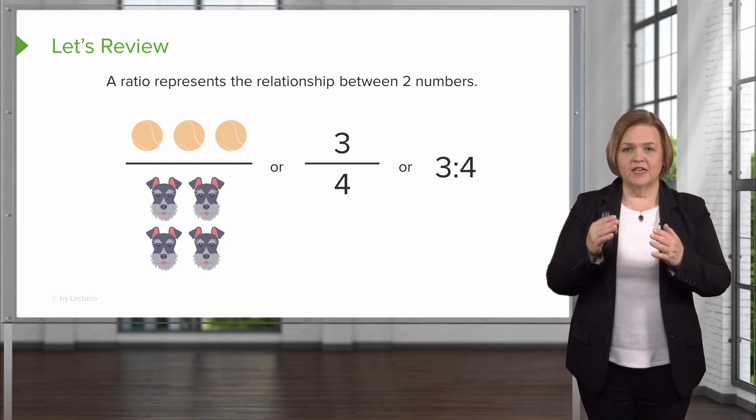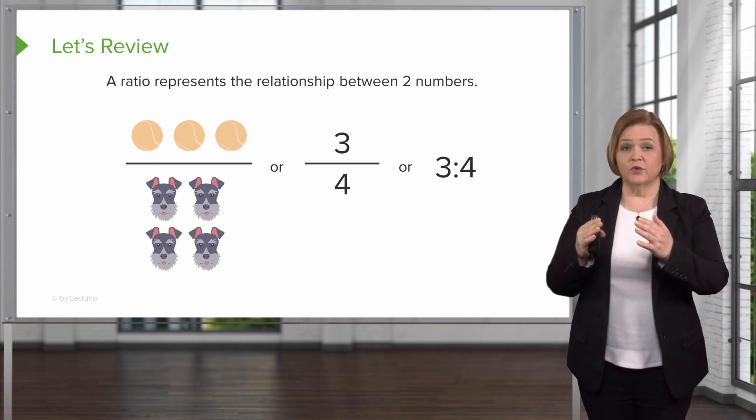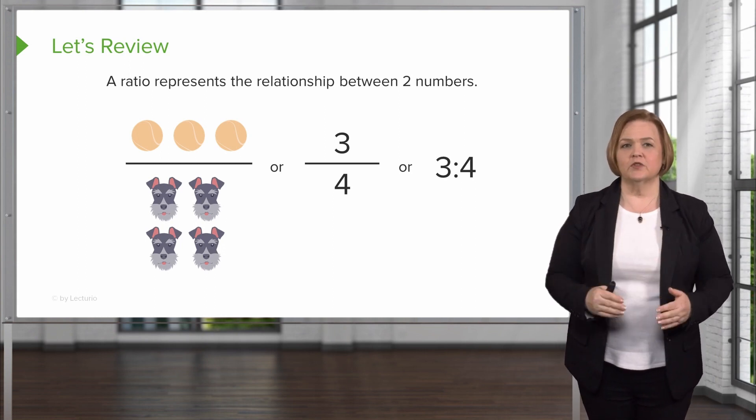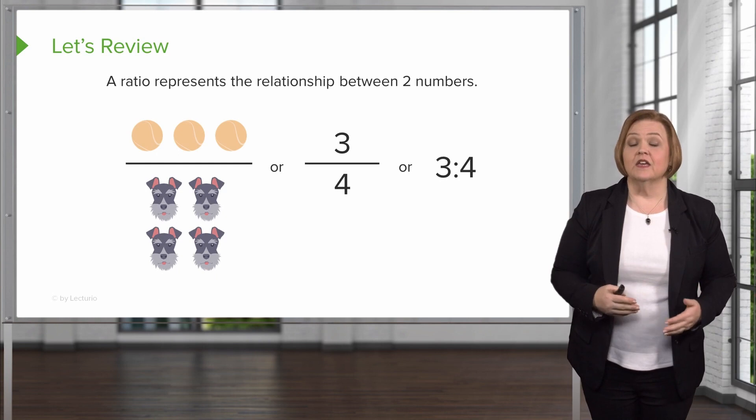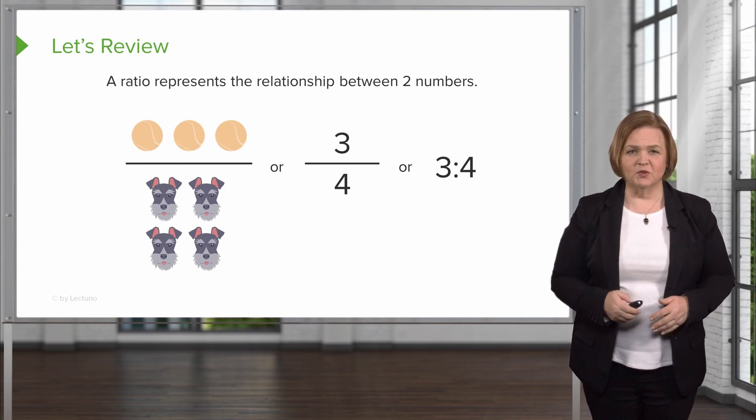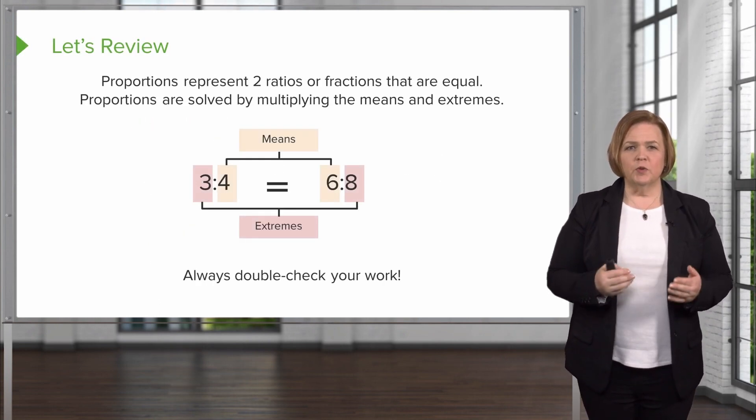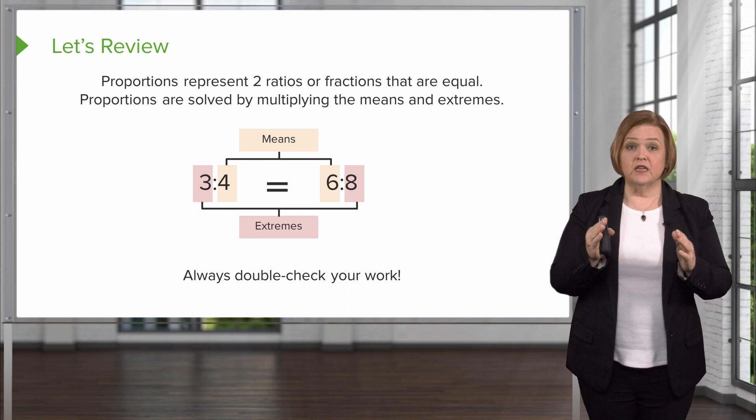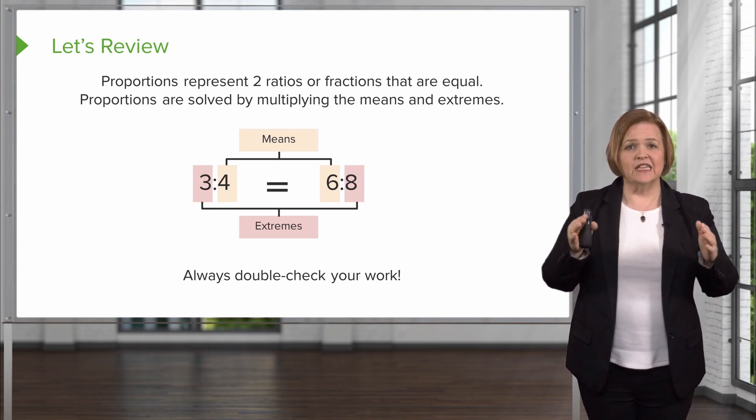Now we take the same thing and you write it as a proportion, we've got three semicolon four. Each one of those three examples are communicating the same thing, just using different symbols. So proportions represent two ratios or fractions that are equal. Proportions are solved by multiplying the means, the numbers in the middle, and the extremes.